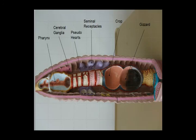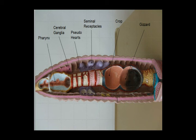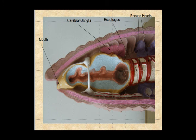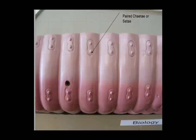Now we'll look at a couple of models. Here's one showing the head region with the pharynx and the mouth, or buccal cavity. You can see the cerebral ganglia. These little purple structures are the seminal receptacles. I like this model because it shows the enlarged portions of the blood vessels called the pseudo hearts, and the open crop and gizzard leading to the intestine. You can also see the setae, or chaetae, that help the animal locomote.